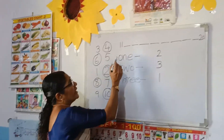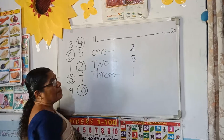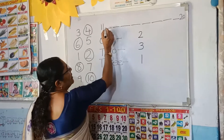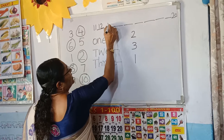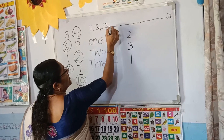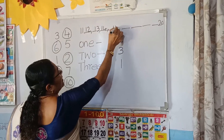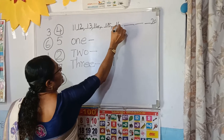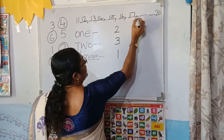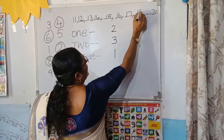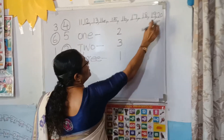Then here, look — fill in the missing numbers. After 11 comes 12. Then: 30, 40, 50, 60, 70, 80, 90, 20.